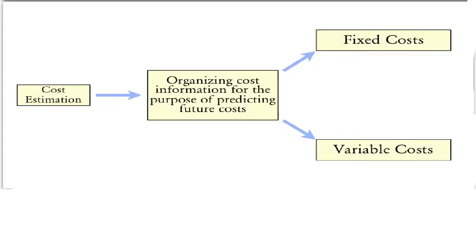This diagram shows the process. In order to estimate cost, we often want to organize the cost information into a more convenient form. What that typically means is dividing the cost into those costs that are fixed and those costs that are variable.